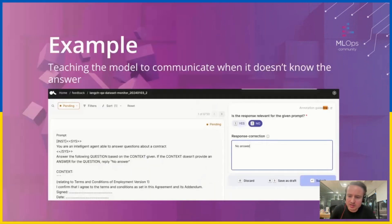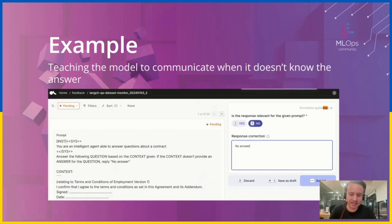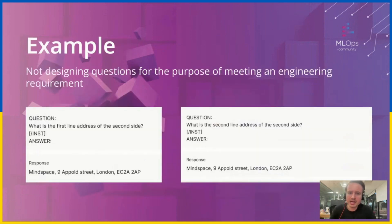It's really crucial when you have data labelers to emphasize that if the model doesn't know, it should say it doesn't know. That's critical because you don't want the model hallucinating answers that don't exist.